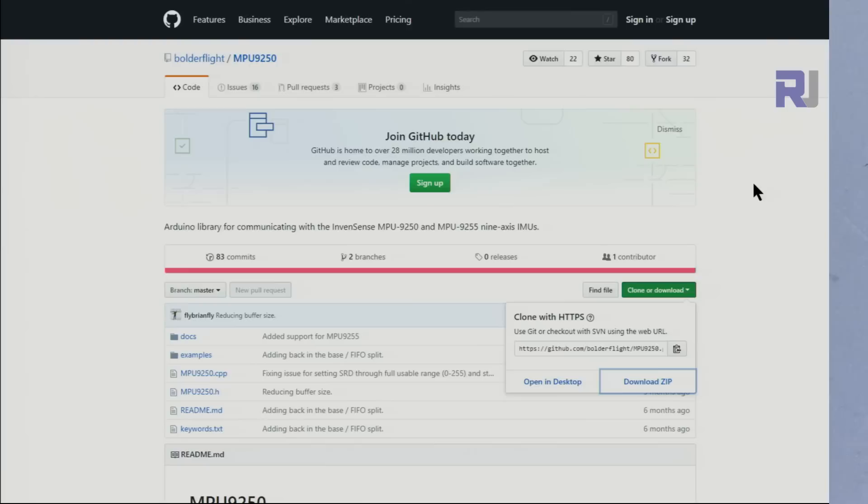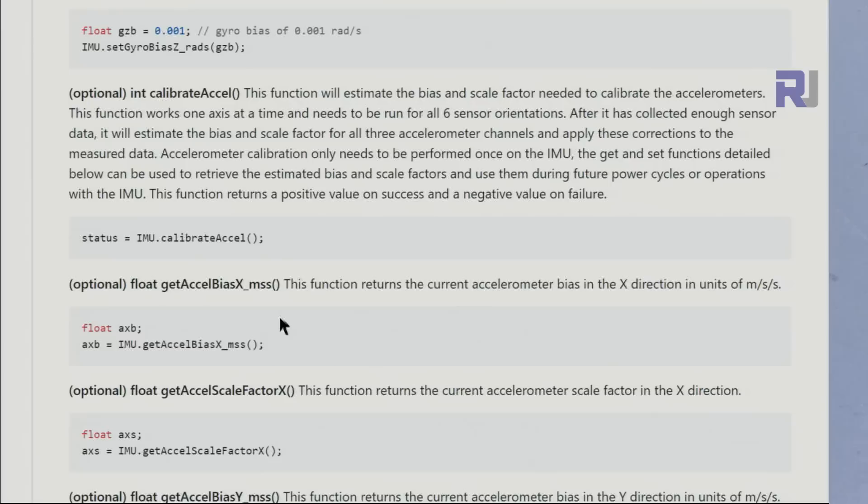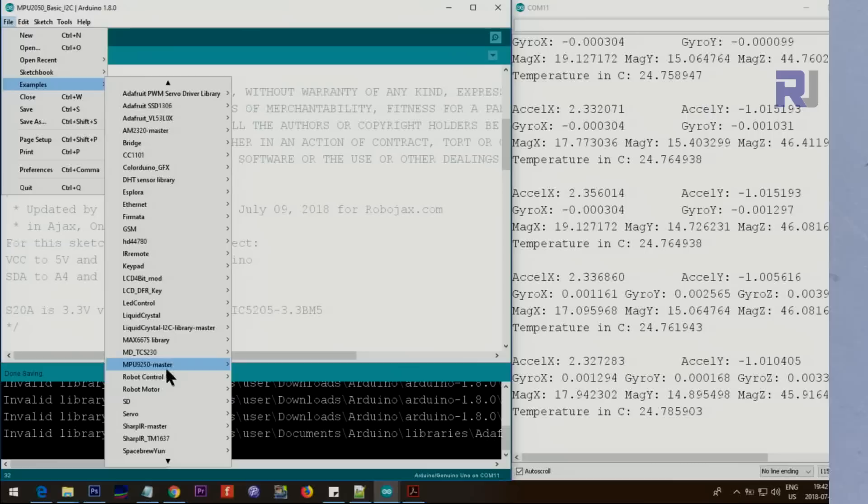I will also provide the link for this when you visit the code page. The library has been downloaded from this page. You will just come here, download it from here, extract it, and put it inside the library. I'll also provide you a link directly from our website robojax.com in case this page moves or changes. There is a lot of good explanation and detail for calibration. Once you install the library, go to File, Examples, and then you will see MPU9250. There are so many examples. I'll try to see how much I can go through.